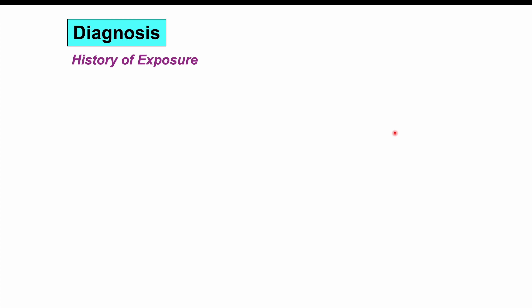Now that we know the signs, symptoms, and pathophysiology, how is this diagnosed and treated? It's important to get a good history to see if there is a history of exposure, since this can often be an unrecognized infection. History of exposure to wild dogs, herding communities, coyotes, or other wild animals is important. This can sometimes be seen in veterinarians and farmers, making such a history important for considering this as a potential diagnosis.